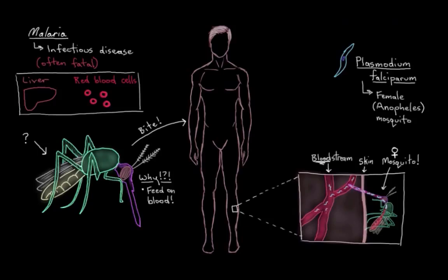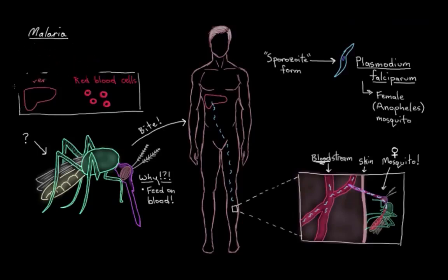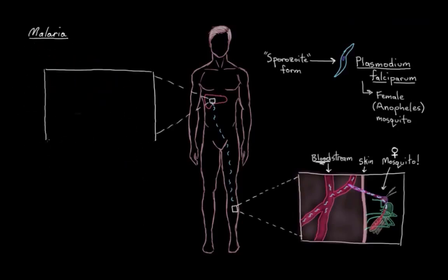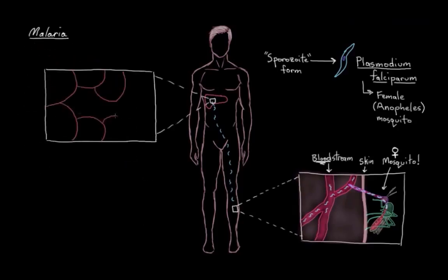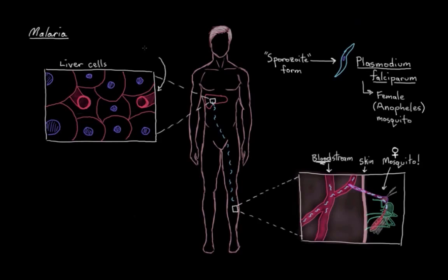After that, the parasites — which are called sporozoites at this stage — swim through our bloodstream until they get to our liver. They infect our liver cells and hang out there for a couple of weeks, usually about two weeks.